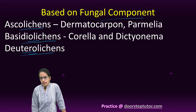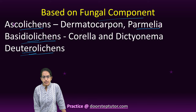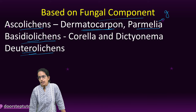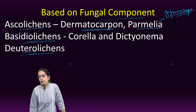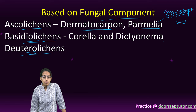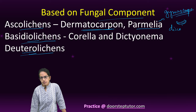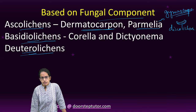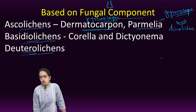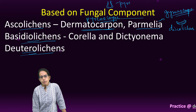Under ascolichens there are two classifications. Parmelia is an example of Gymnocarpia, where the fruiting body is disc-shaped, and therefore it is also known as a discolichen. The next is Dermatocarpon, which is an example of Pyrenocarp, where the fruiting body is flask-shaped in nature. It is also known as a pyrenolichen.